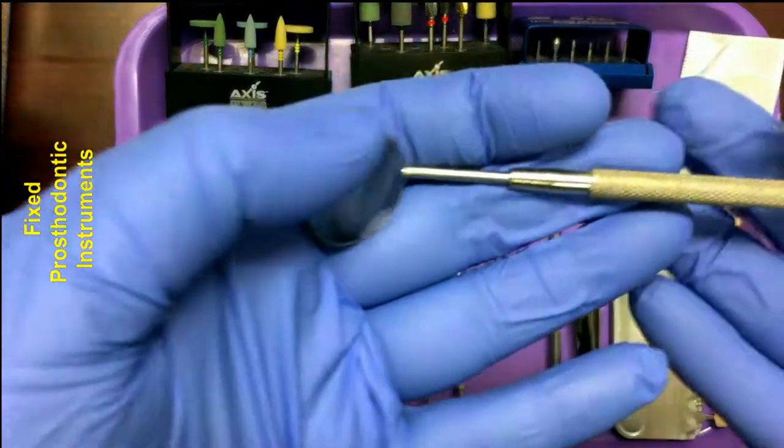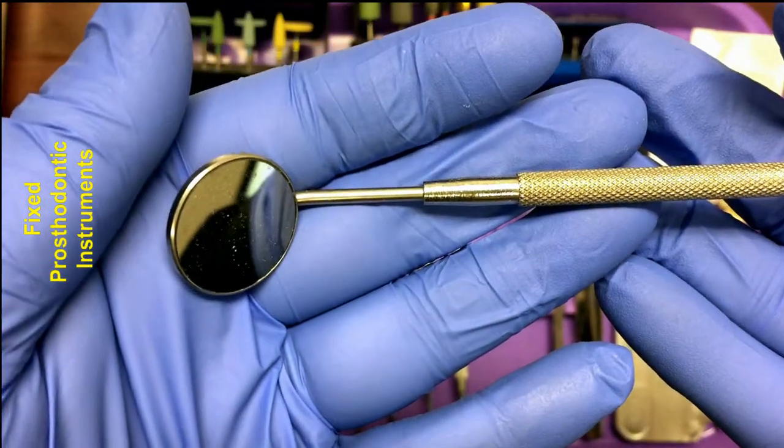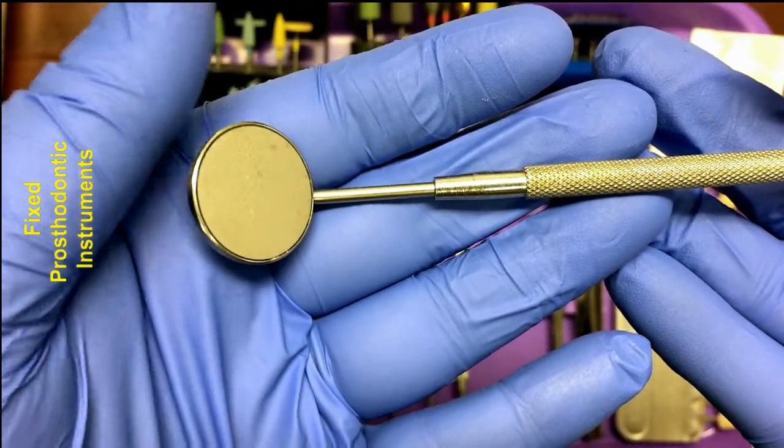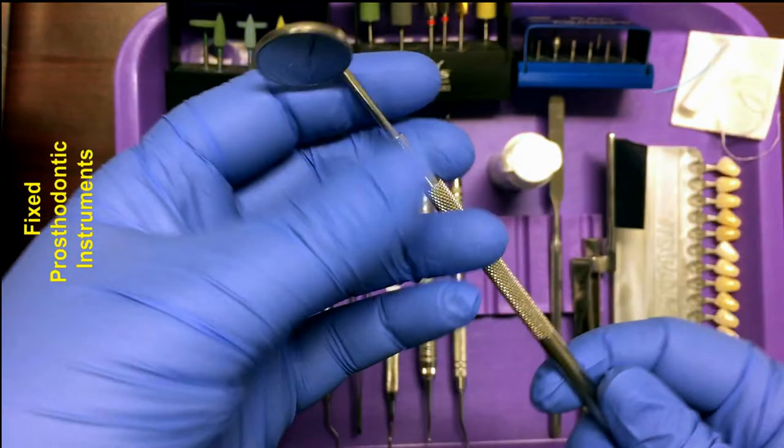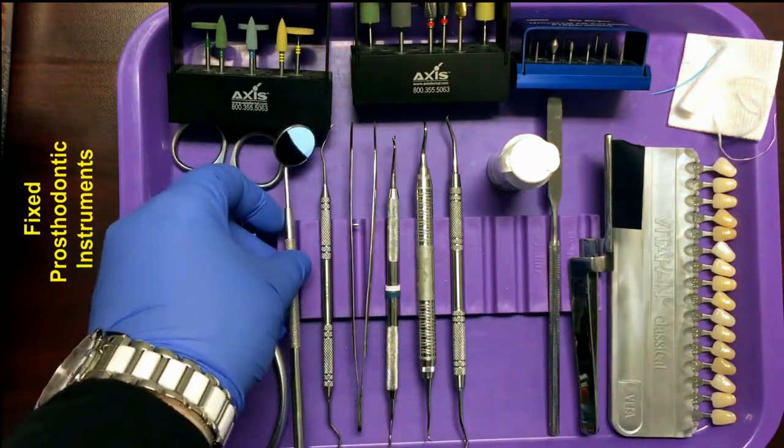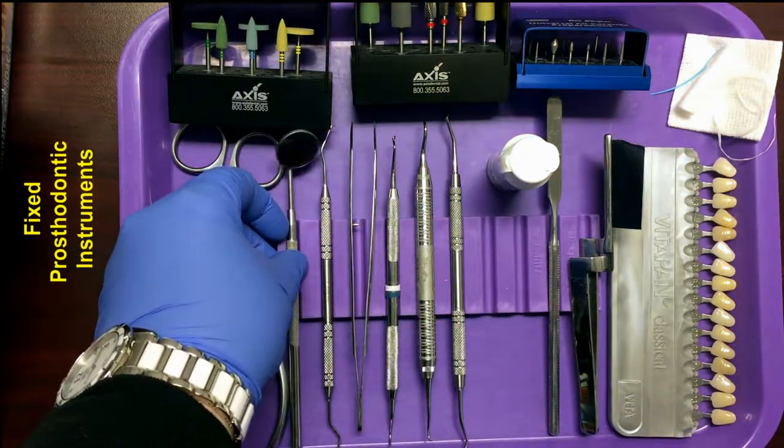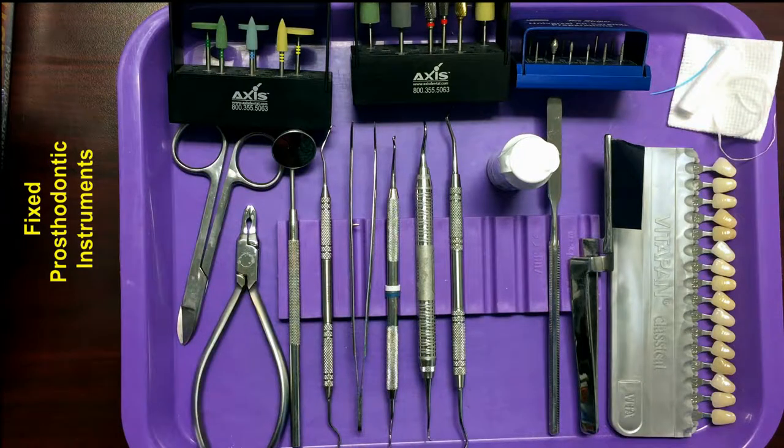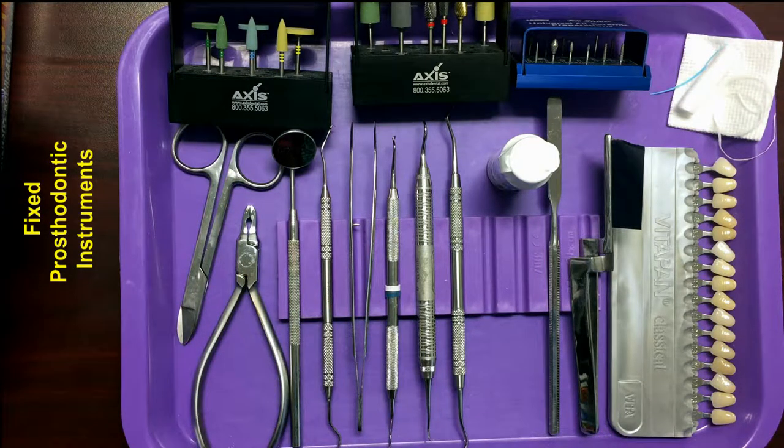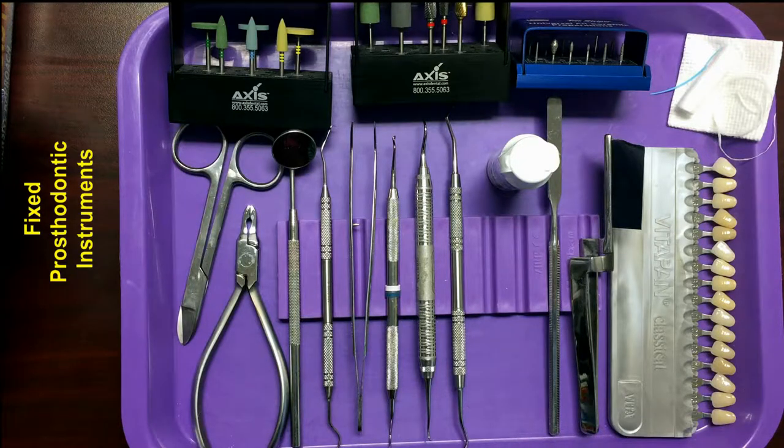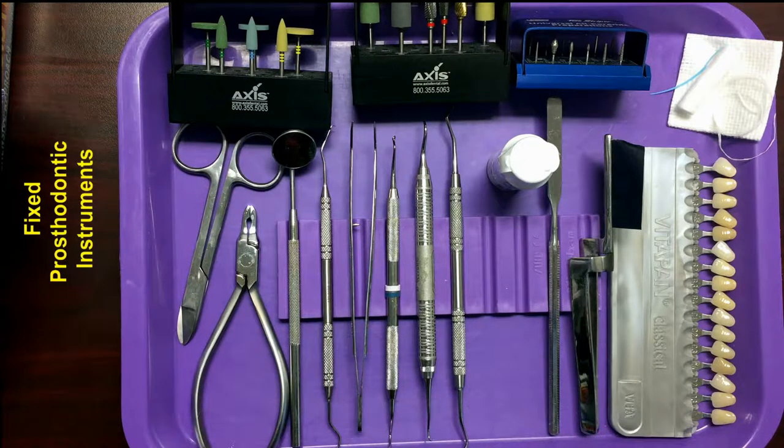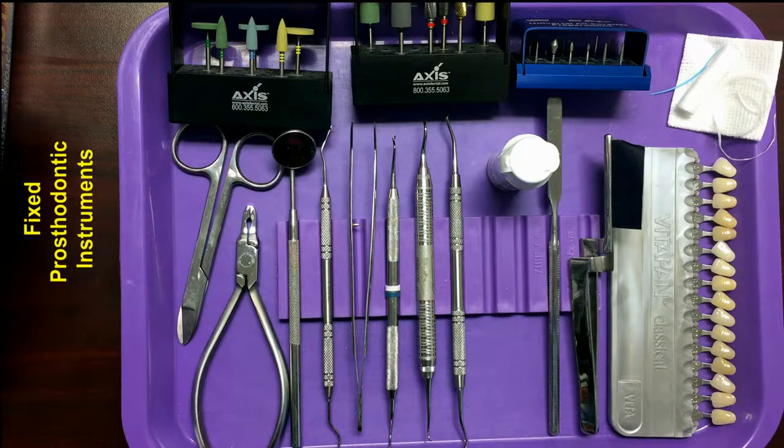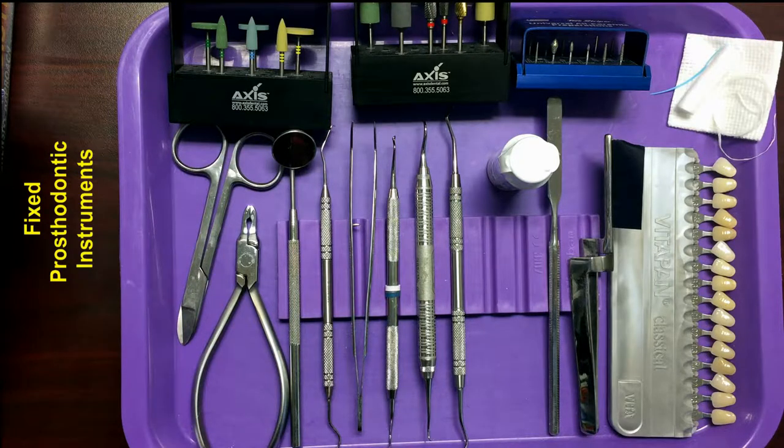The first instrument is the mouth mirror. The mouth mirror has several purposes. It is used for indirect vision for areas that the doctor cannot see directly with their own eyes. It can also be used to retract soft tissue such as the lips, cheek, and tongue, and to reflect light in areas of the mouth that are dark or hidden from the operating light.